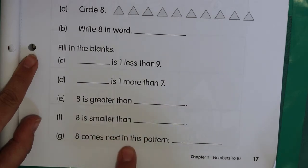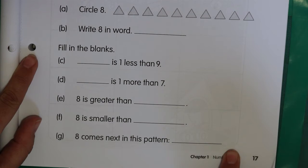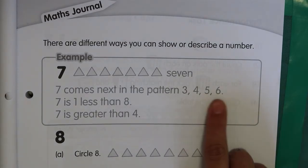Eight comes next in this pattern. So you need to make any pattern where 8 would be the next one. You could count in 1s, or you could count in 2s, as long as 8 is the next one in this pattern. Remember to look at the example at the top. They used that as the example for 7.